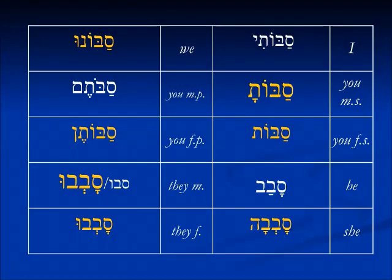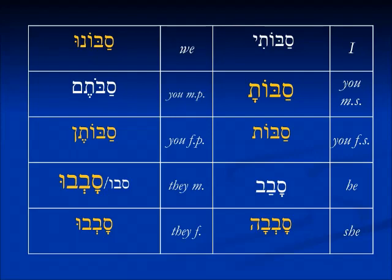Where we run into some irregularity is in the past tense, the perfect tense. It's not savavti — it becomes saboti, sabota, sabot. When you're looking at these, all of a sudden it looks like there are only two letters to the root, and maybe you're looking at a hollow verb or something like that. So it is easy to confuse with the hollow verbs as you look at the different forms.